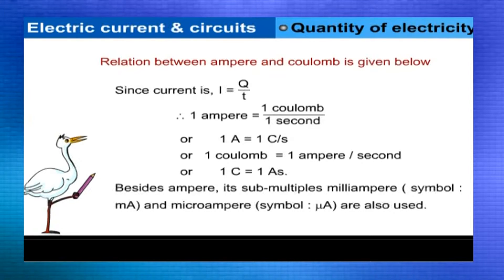Since current I = Q / t, therefore one ampere is equal to one coulomb per one second. Or, 1 A = 1 C/s. Or, one coulomb is equal to one ampere-second. Or, 1 C = 1 A·s.